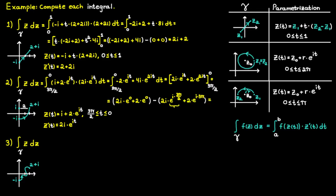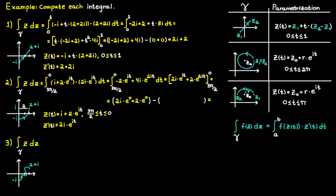We note that e raised to the power of i times 3pi divided by 2 equals minus i, and that e raised to the power of i times 3pi equals minus 1. Using this, the second term becomes 2 minus 2, which is 0. All that remains is the first term, which equals 2i plus 2, since e raised to the power of 0 is 1. This is exactly the same answer as in the last example, so it seems the function doesn't care which path we take as long as the start and end points are the same.